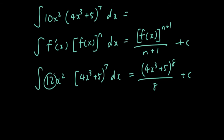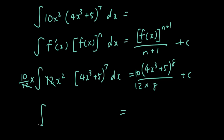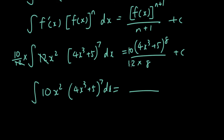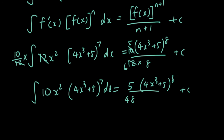So multiply both sides by 10/12. On the left side, 10/12 × 12x² = 10x², giving the integral of 10x²(4x³ + 5)^7 dx. On the right side, multiplying by 10/12 gives 10/12 × (4x³ + 5)^8 / 8. Simplifying: 10/12 = 5/6, and 5/6 divided by 8 = 5/48. So dividing top and bottom by 2, the answer is 5/48 × (4x³ + 5)^8 + c.